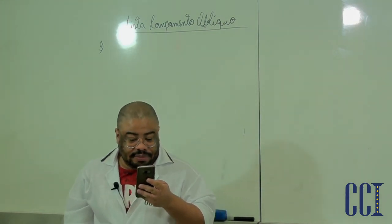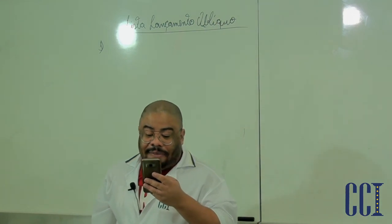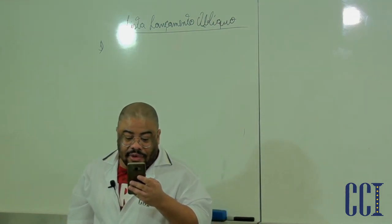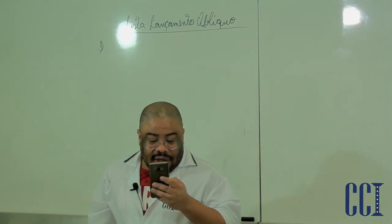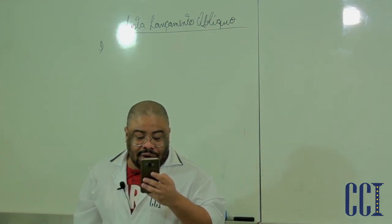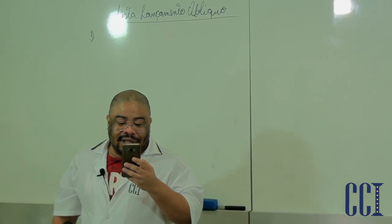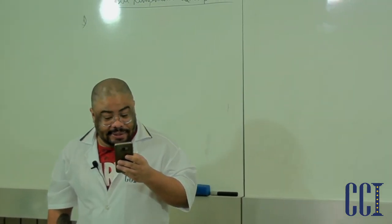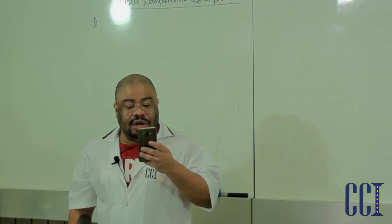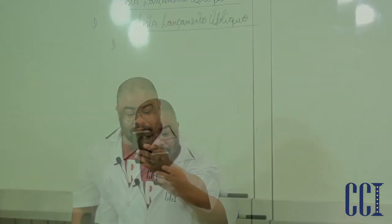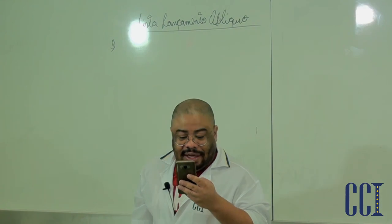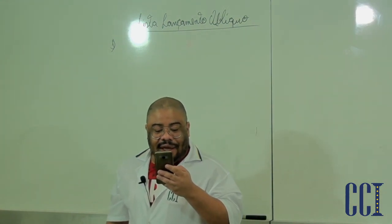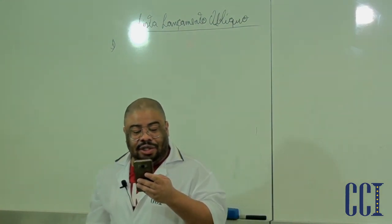Questão 1 diz o seguinte: Uma bola de ping-pong rola sobre uma mesa com velocidade constante de 2 metros por segundo. Após sair da mesa, cai atingindo o chão a uma distância de 0,80 metros dos pés da mesa. Adote g igual a 10 metros por segundo ao quadrado. Desprezar a existência do ar e determine: